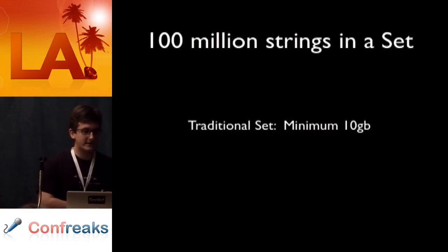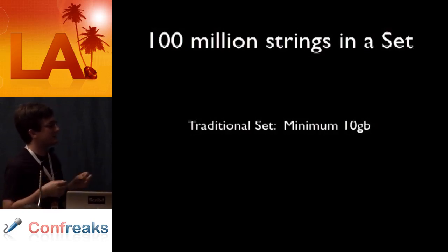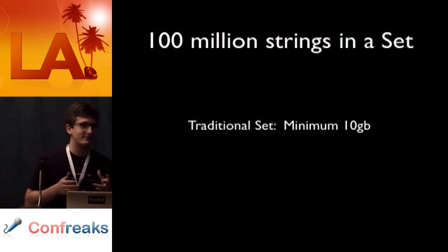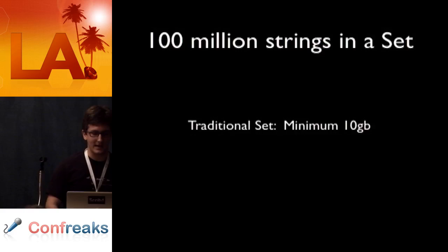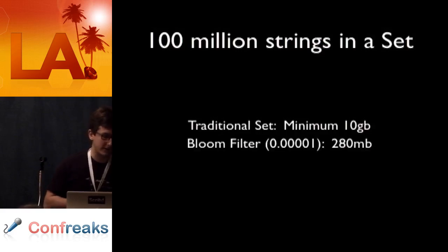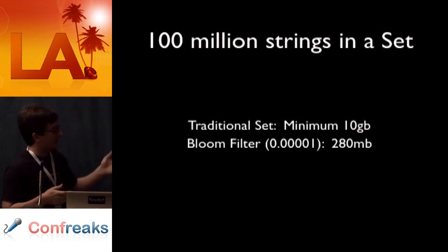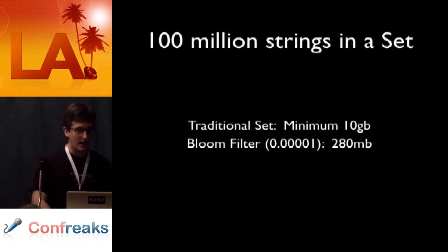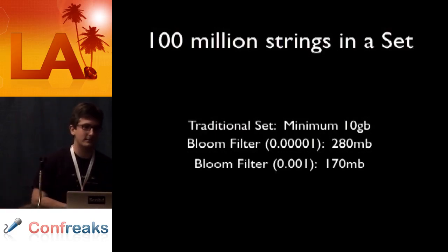Let's say that we have 100 million strings about 100 characters long. If you were to put these in a traditional set, you'd be talking something like 10 gigabytes of memory, so not really feasible. In a bloom filter, if you thought that like a 0.00001% chance of failure is okay, you could do the same thing in about 280 megs. If a higher failure chance is okay, you could do the same thing in 170 megs.